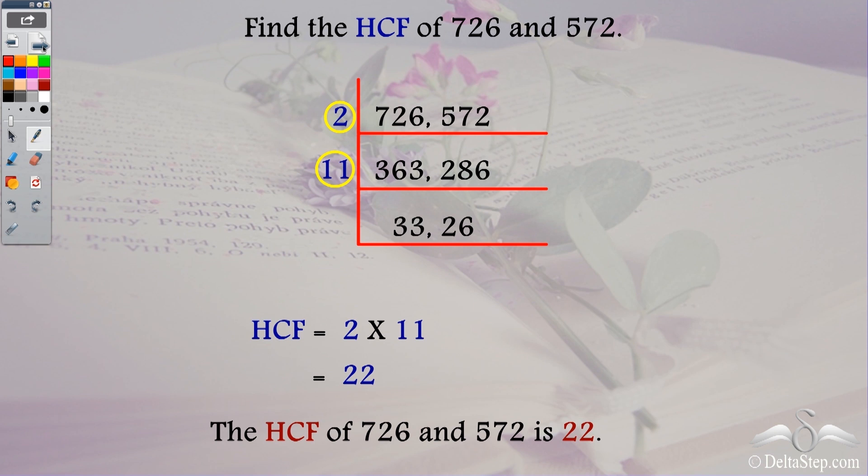So it is not necessary that you need to stop only when you reach prime numbers. There will be cases like this where you will not reach prime numbers but still you need to stop because there is no prime number which divides these two. So 2 and 11 are the common prime factors of these two numbers and multiplying them I get the HCF.